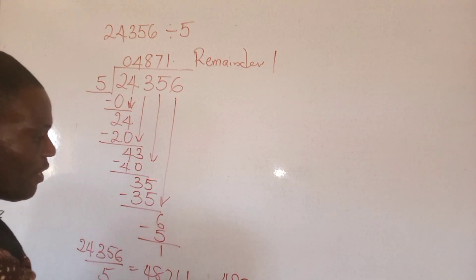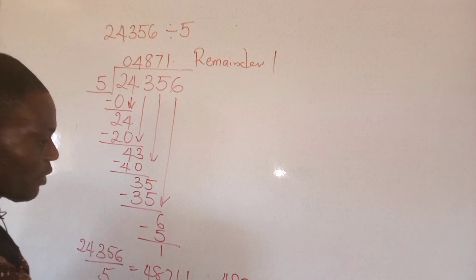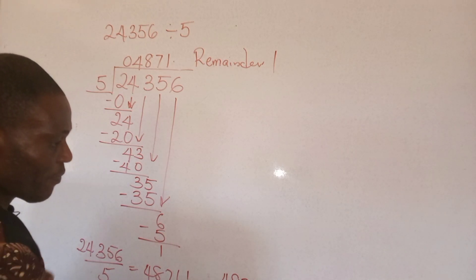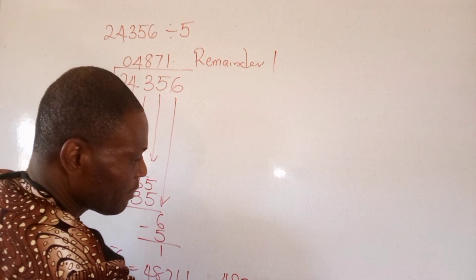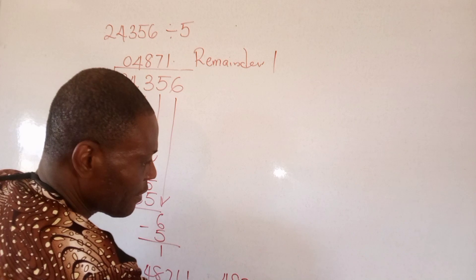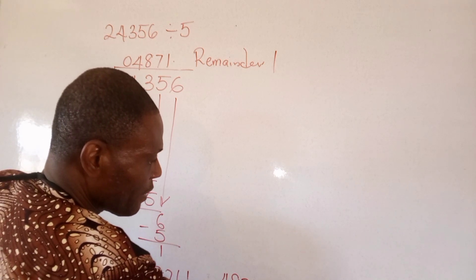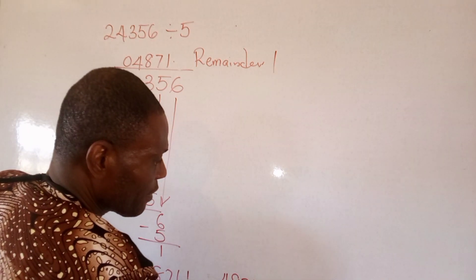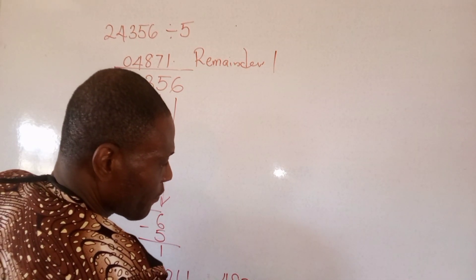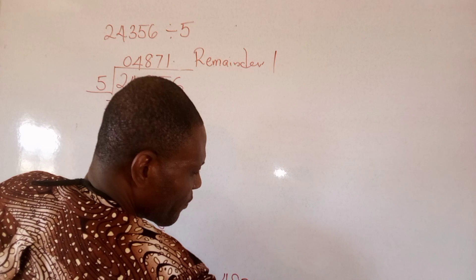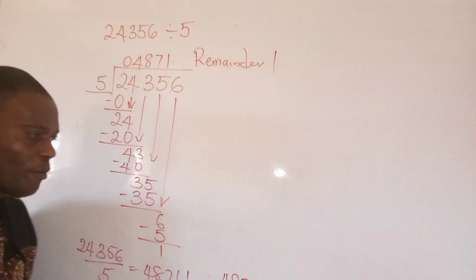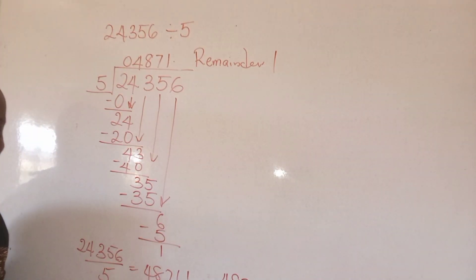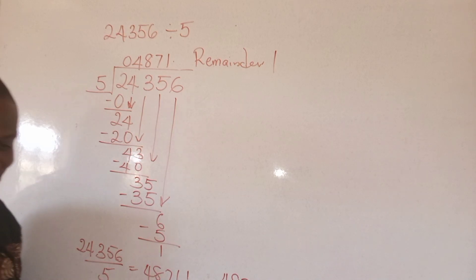So the answer is four thousand eight hundred and seventy-one point two in one decimal place. I hope this is clear. Thank you for listening. Goodbye.